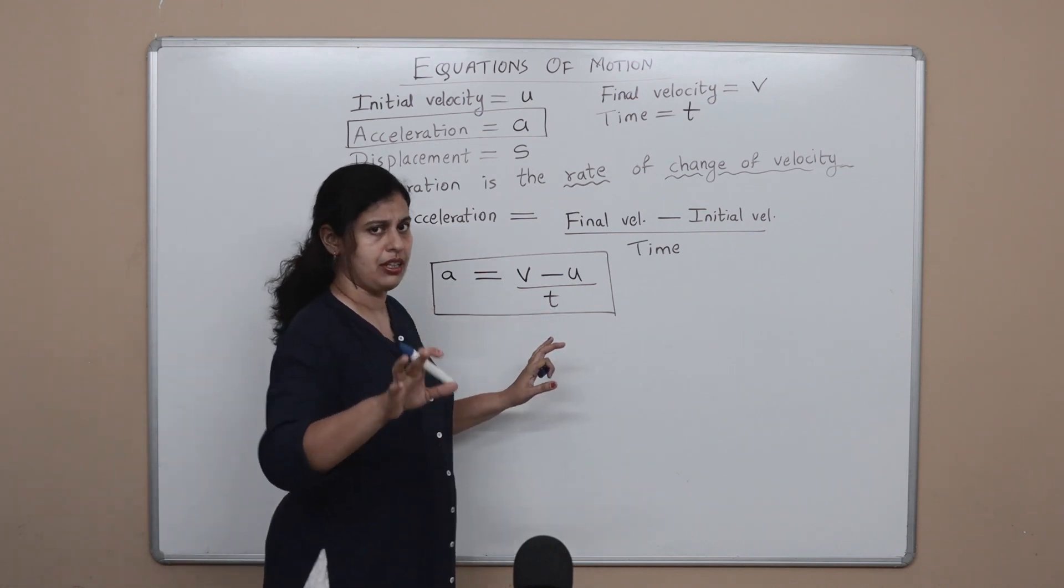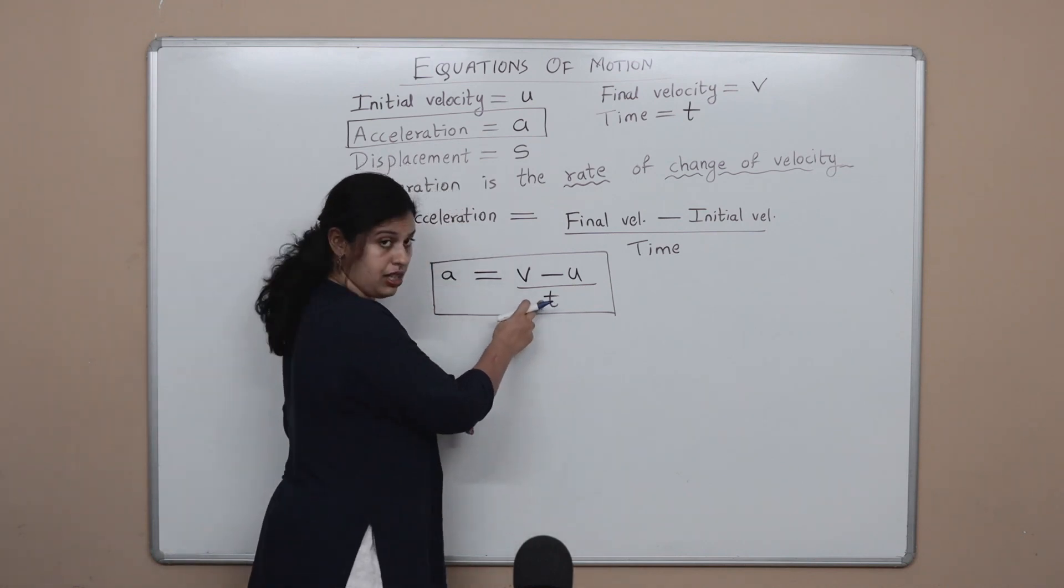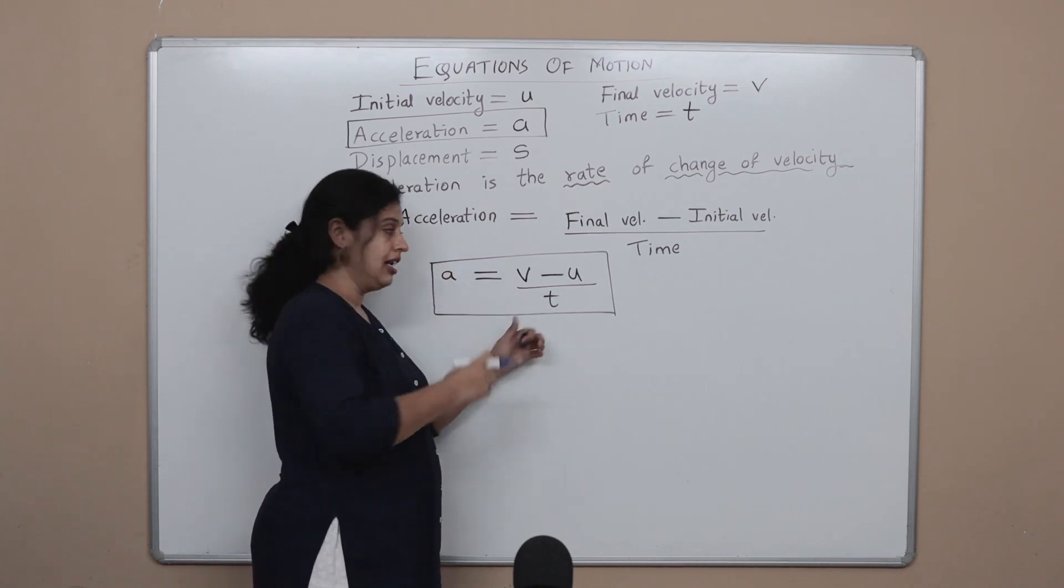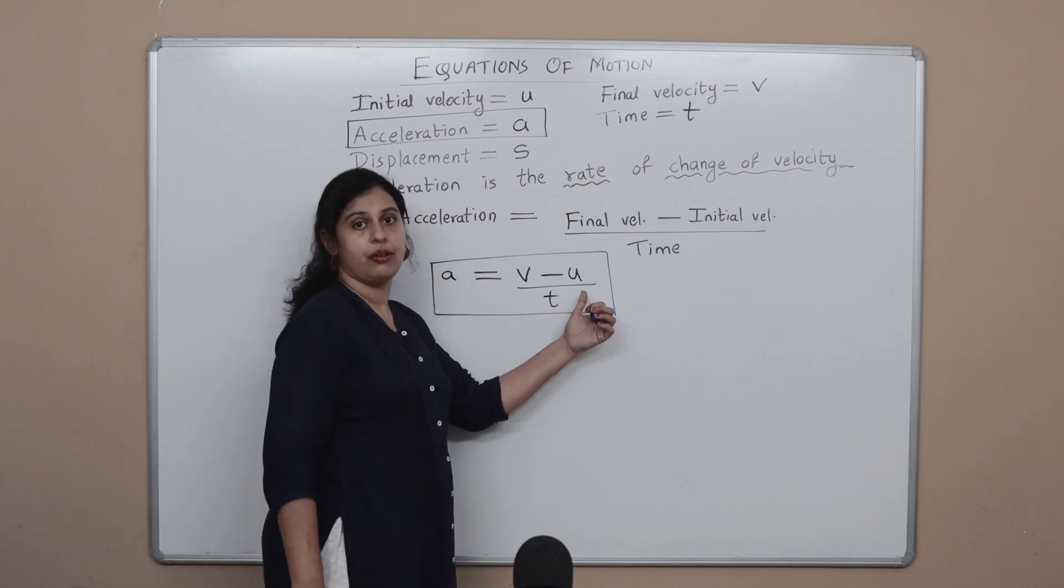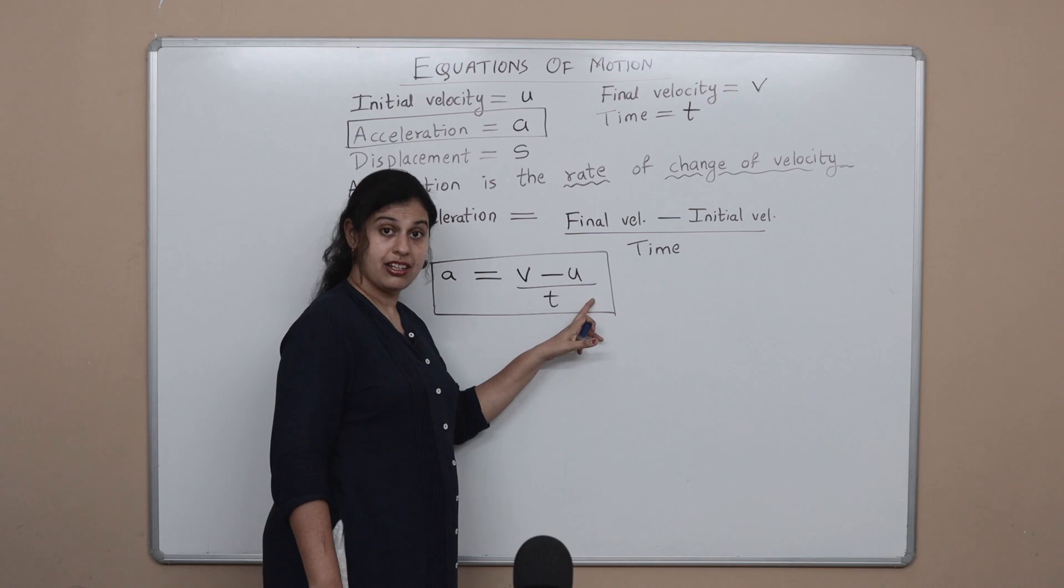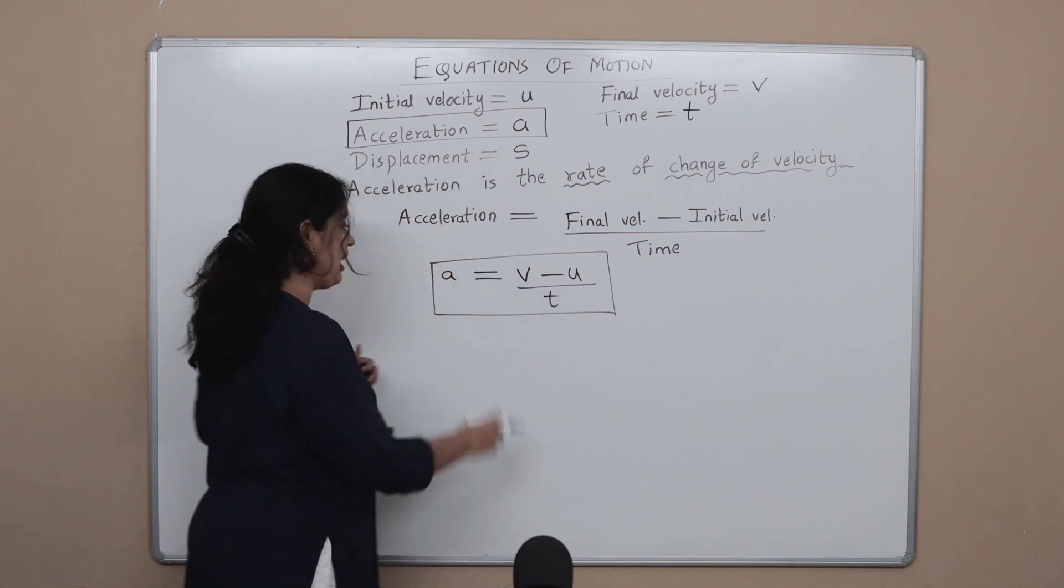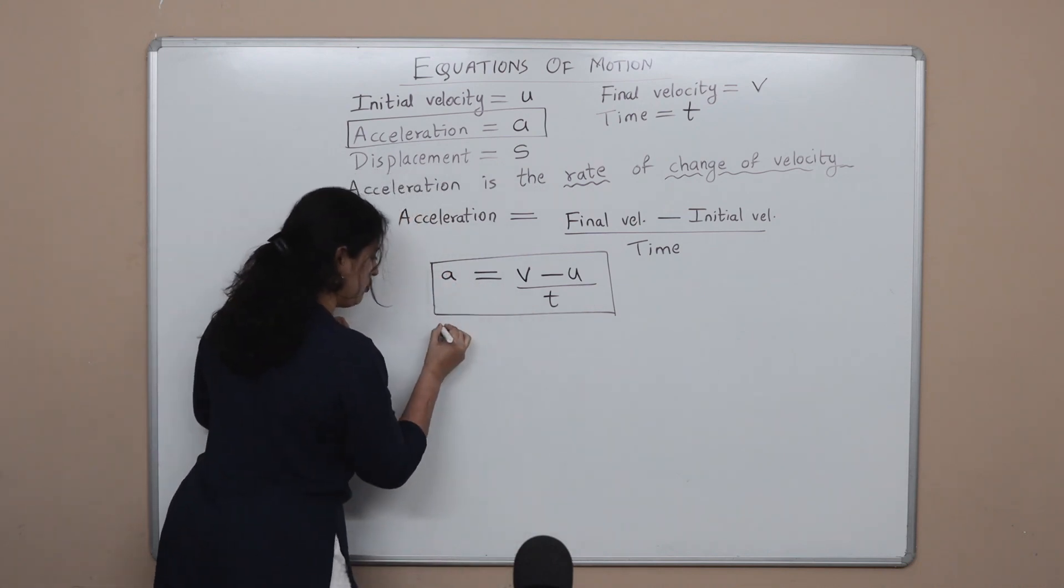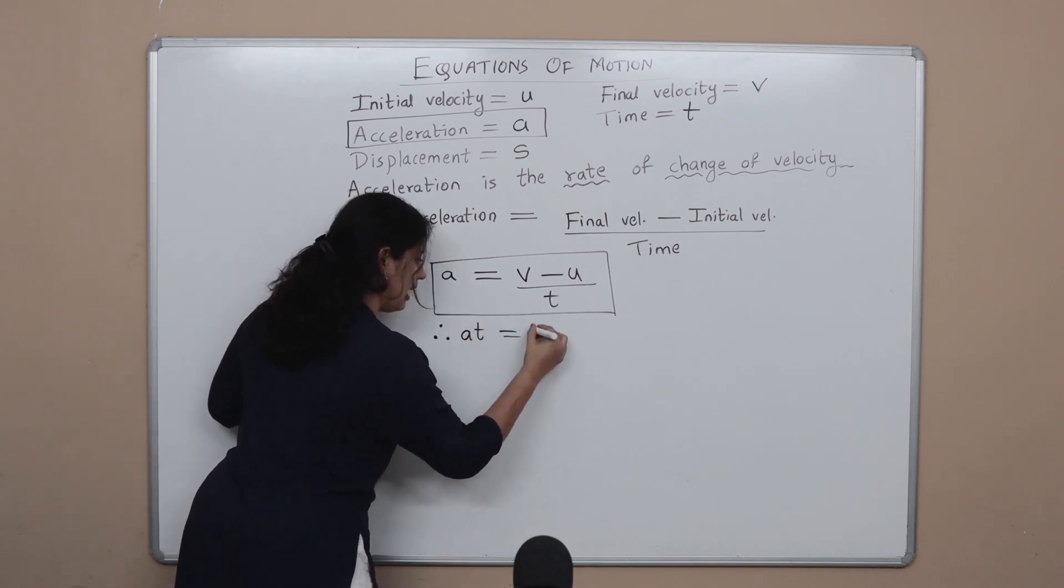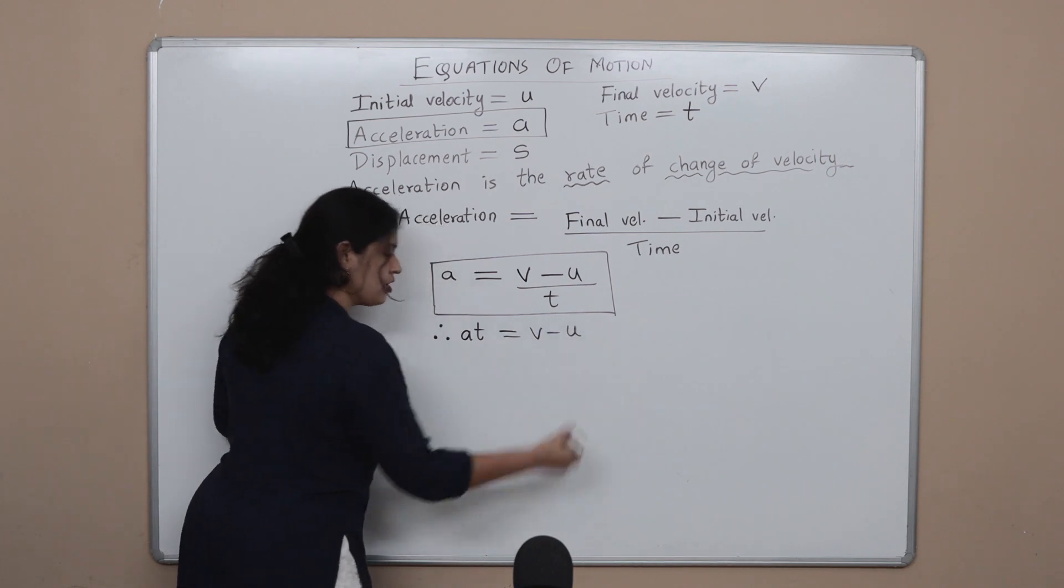We do not want any terms in the denominator. Now this term is here, I do not want it here, what do I do? I just take it to the left hand side. Now when I take the denominator from the right to the left, it gets multiplied, right? Denominator is division. If I take it to the left and I multiply it here, therefore what do I get? This t comes here and the term becomes a t is equal to v minus u.